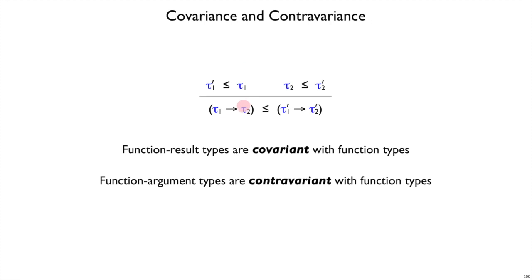The result types get involved in the same order as the overall arrow type. That is, this arrow type is on the left of the subtype relation to this other arrow type, and its result type, tau2, compared to tau2 prime, is also in the same orientation.